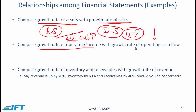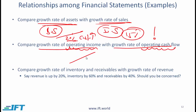Comparing the growth rate of operating income with the growth rate of operating cash flow: ideally these growth rates should be similar, even though operating income and operating cash flow measure slightly different items. If operating income is growing at 15% but operating cash flow is flat, that would be a concern — it could imply that earnings are growing due to accrual-based accounting and the impact is not being seen in actual cash flow.